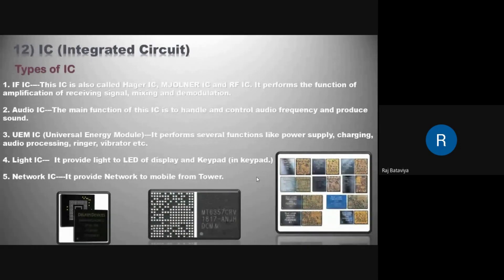The fourth is the Light IC — it provides light to the LED display and the keypad. The Network IC provides network to the mobile from the tower.